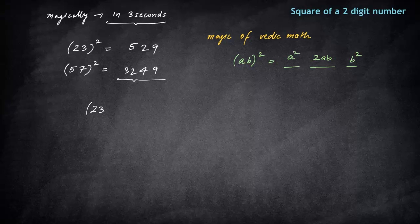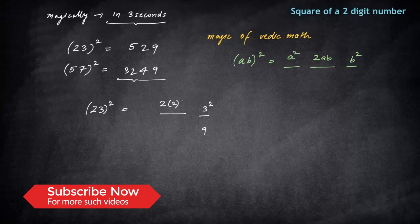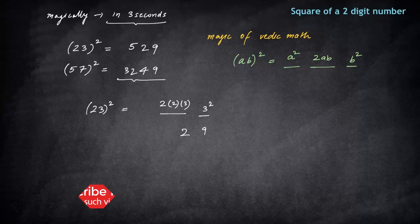Let's see how we have done this. So for 23 square, what I did was three square, which is nine, the first spot. Second spot is 2ab, which is 2 into 3. This comes out to be 12. And 12, since it is there, 1 is carry forward.